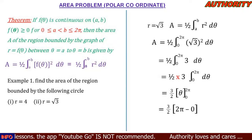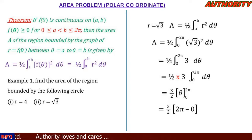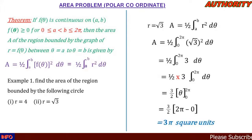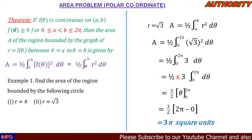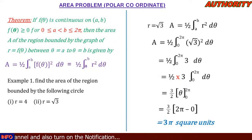So we have 3 over 2 times 2pi, which gives us 6 over 2, and 6 over 2 equals 3. So the area is 3pi square units. The area of the region bounded by the cycle r equal to square root of 3 is 3pi square units. Thank you for watching. If you are new, please subscribe, like, and share our video. Stay blessed.